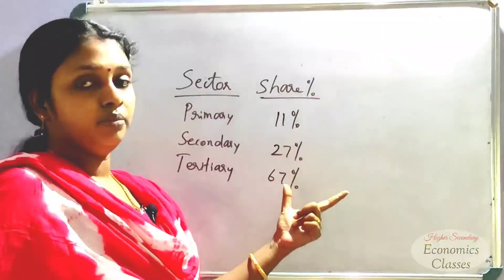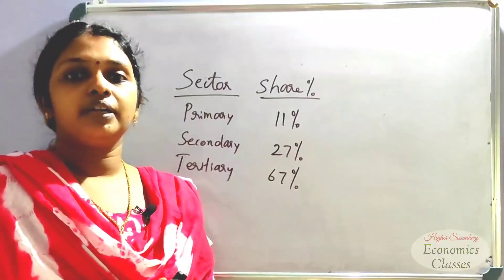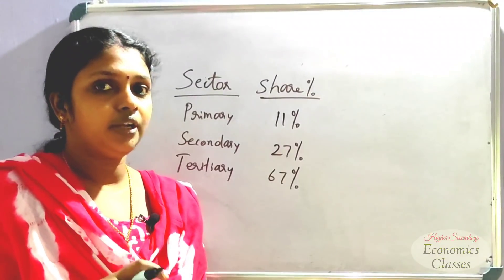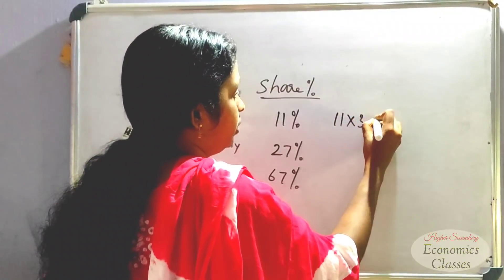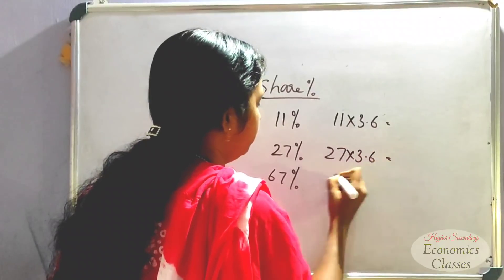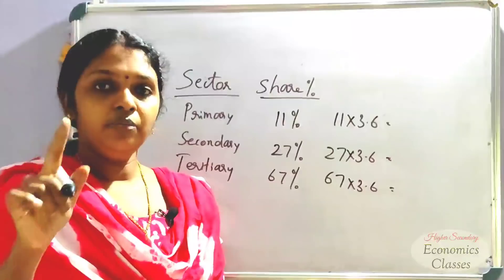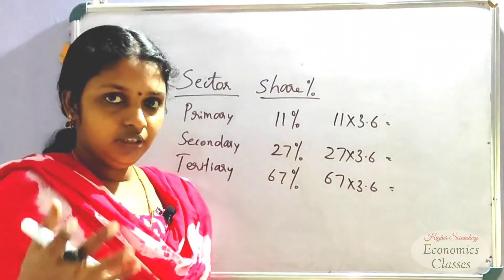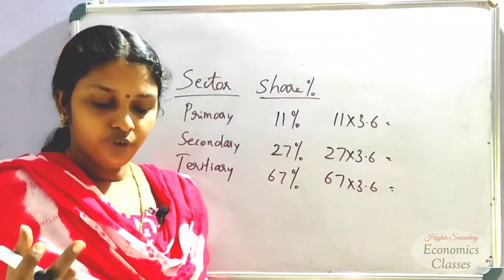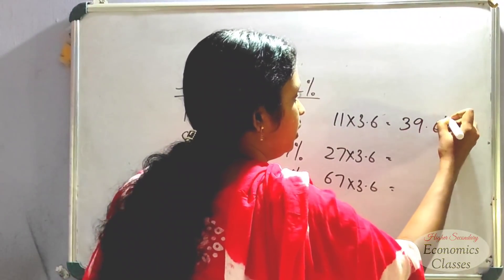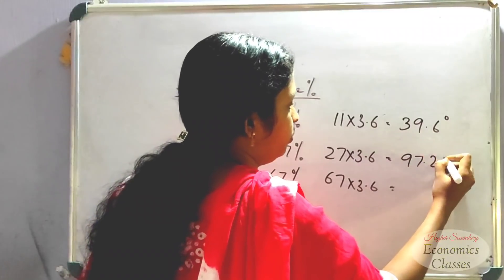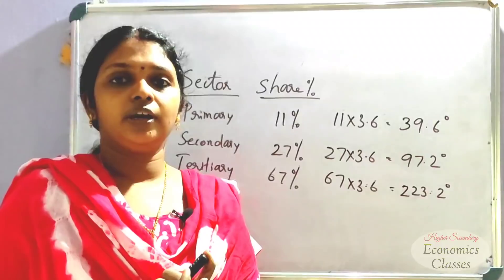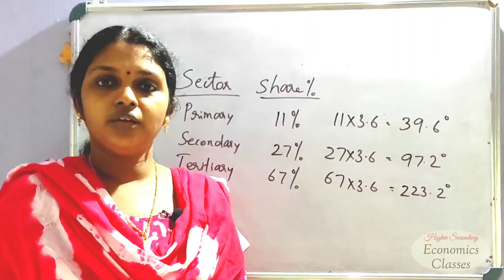Our total is 360 degrees. So, we multiply the percentage values to get degree values: 11 multiplied by 3.6, then 27 multiplied by 3.6, then 67 multiplied by 3.6. The resulting degree values are: 39.6 degrees, 97.2 degrees, and 223.2 degrees. Now, if you have a protractor, we mark the points at these degree values.